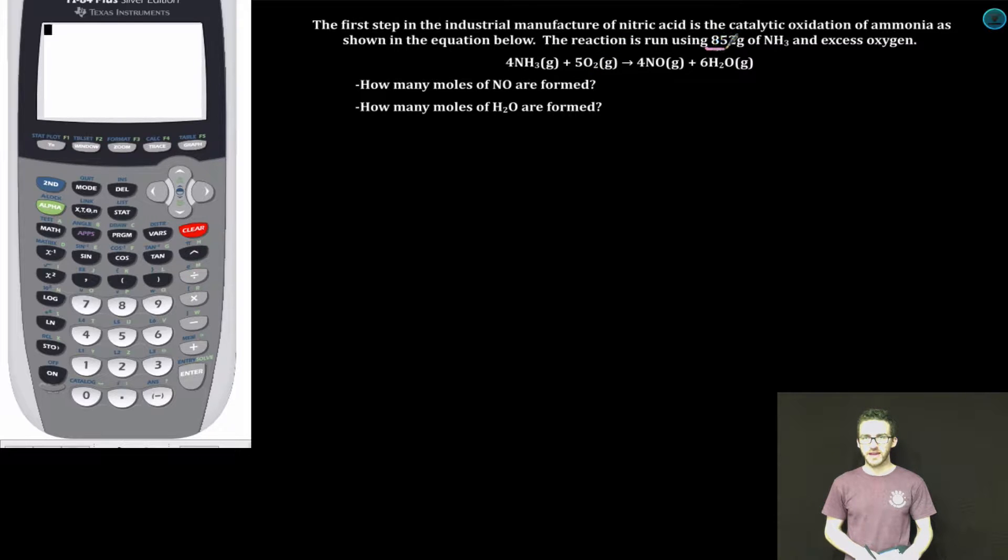Alright, as always with every stoichiometry problem, once you have your balanced chemical equation, start your dimensional analysis with what you're provided in the problem. In this case, 852 grams of ammonia. Set up your dimensional analysis. Now,